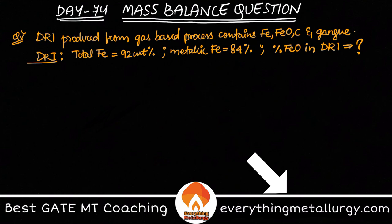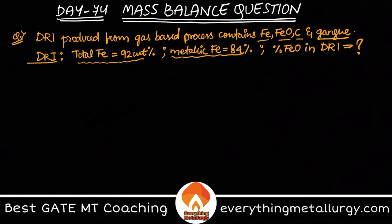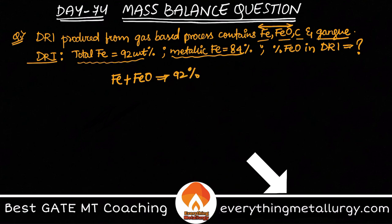DRI produced from gas-based processes contains Fe, FeO, C, and gangue. The DRI composition is given such that the total Fe content is 92% and the metallic Fe — that means pure Fe — is 84%. So Fe plus FeO is how much? 92%.